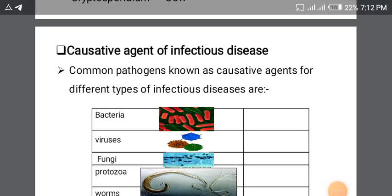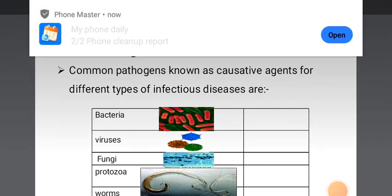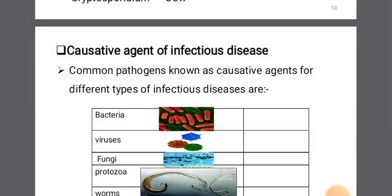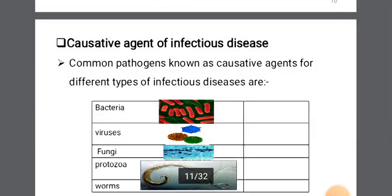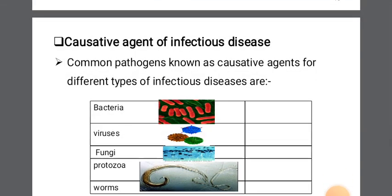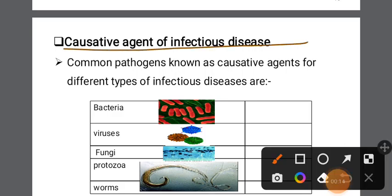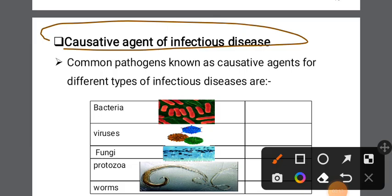Hello everyone, welcome to the unique family. I am here to introduce the first video. This is the first video of the biology and general biology chapter 6 — infectious disease and immunity.